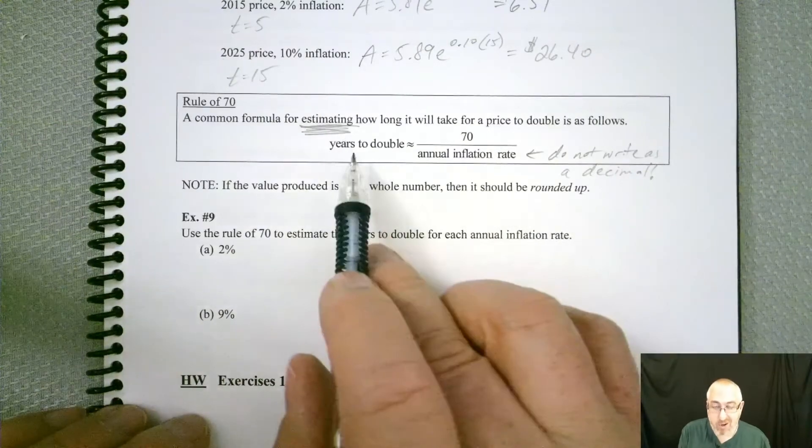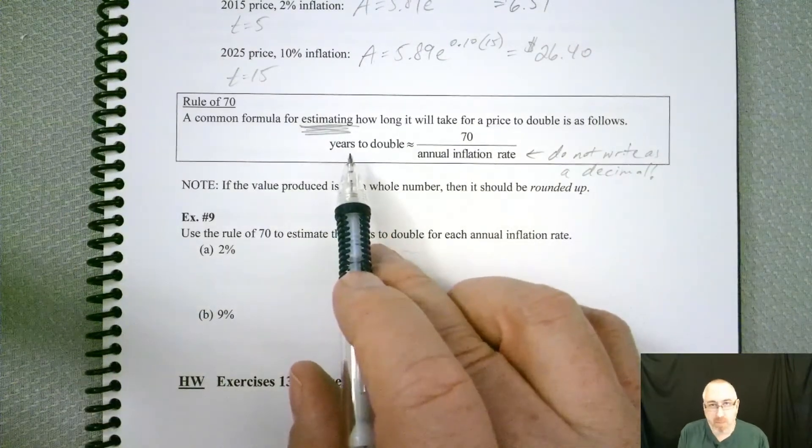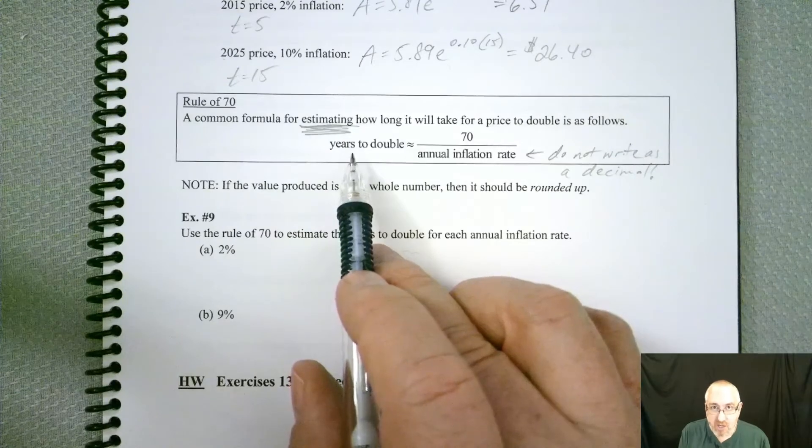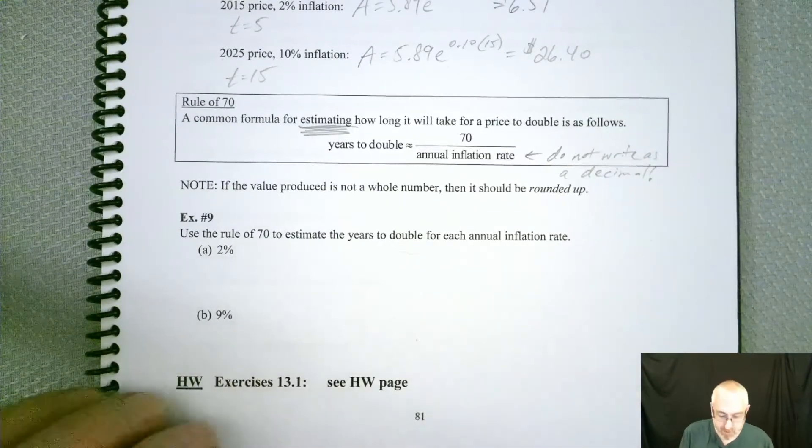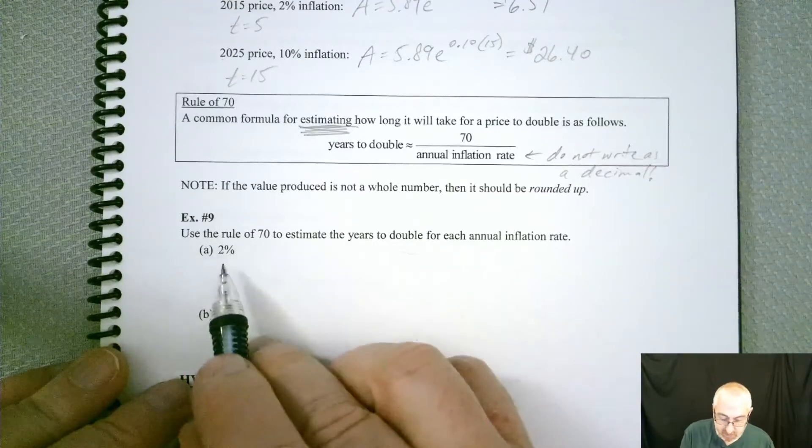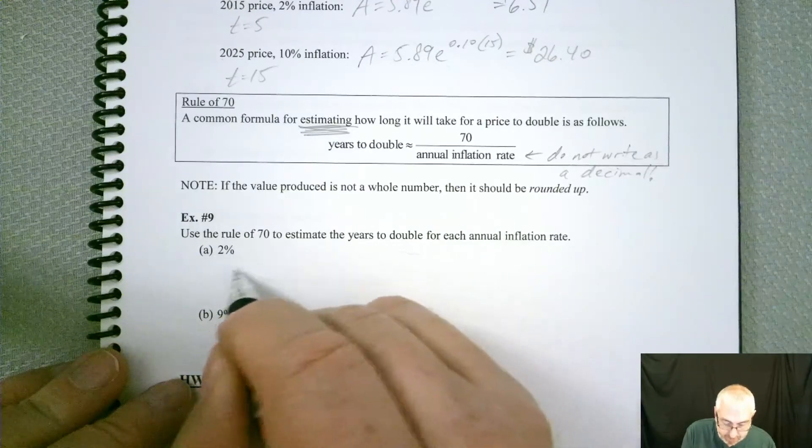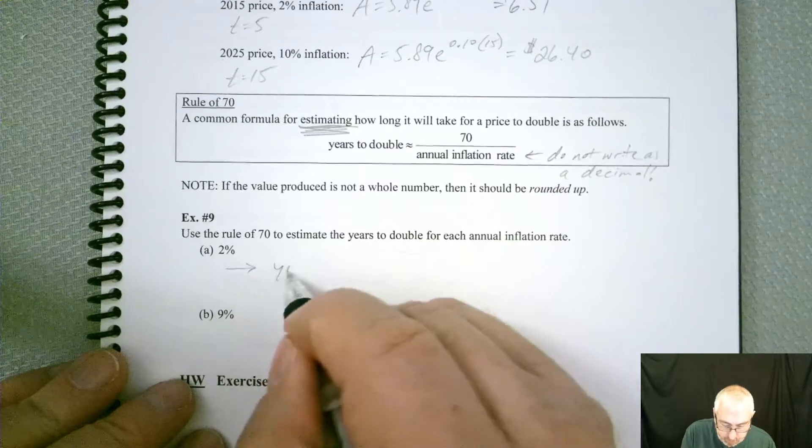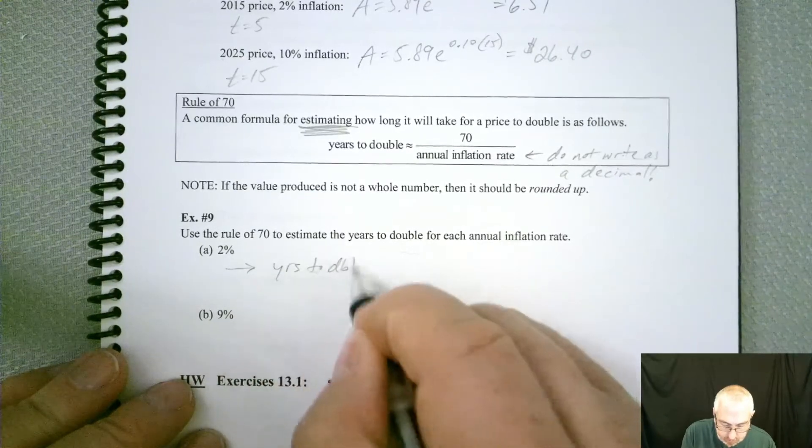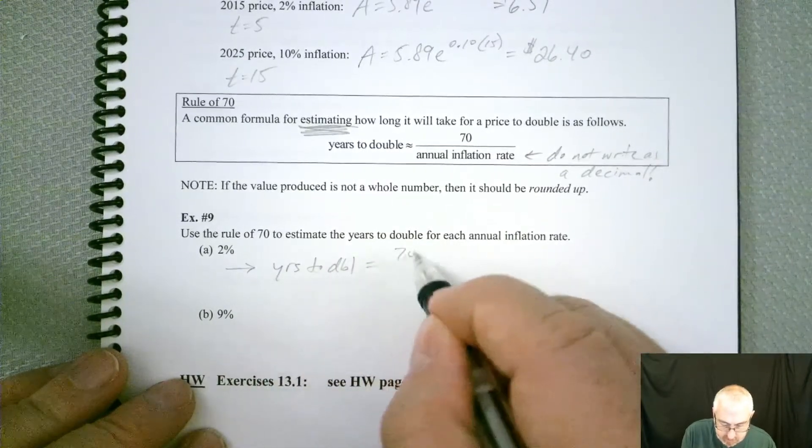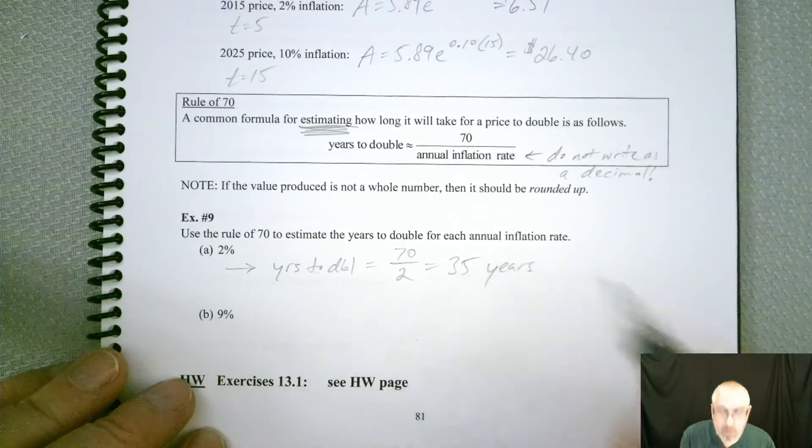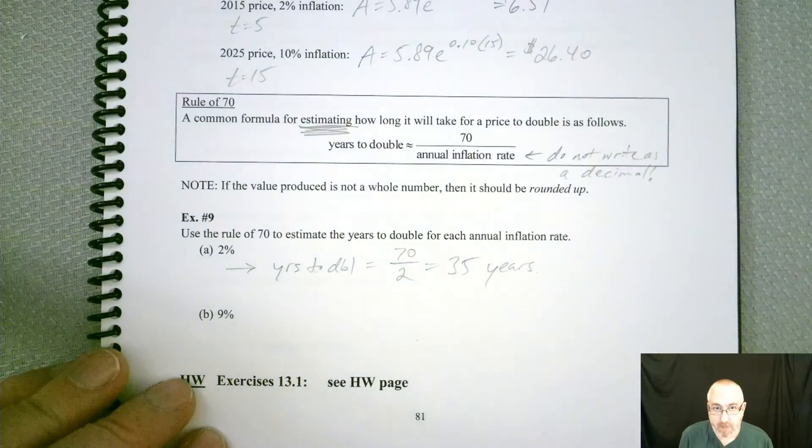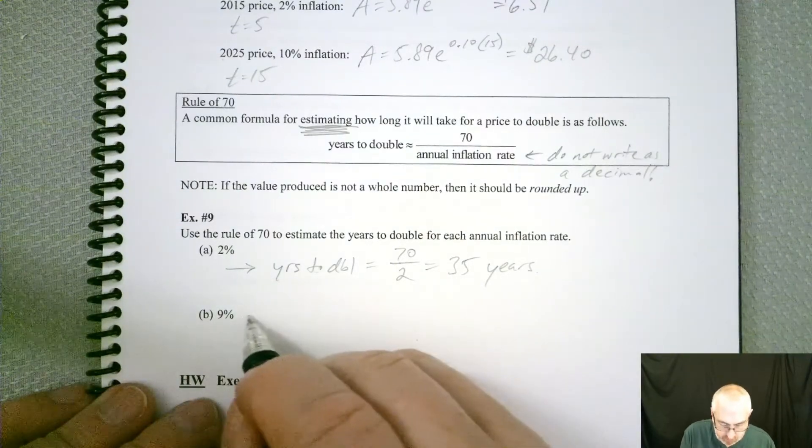This is the one time that you do not want to do that. All right. And now, the only other thing to be careful about is if the value produced is not a whole number, then it should be rounded up. Because, again, we're talking about years. And we don't want to be too stingy on that. So we want to always round it up so that way we make sure we have enough time. All right. So the Rule of 70. If you have a 2% inflation rate, the years to double should be equal to 70 divided by 2, which is 35 years. Fast, right?